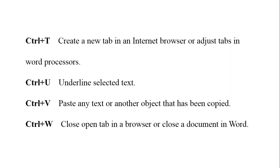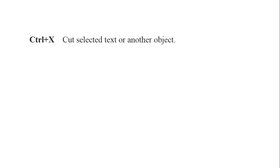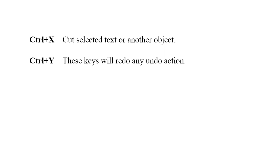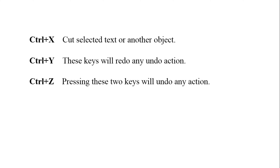Ctrl plus W is used to close the open tab in a browser or close a document in Word. Then ctrl plus X is used to cut the selected text or another object. Ctrl plus Y will redo any undone actions. And ctrl plus Z — pressing these two keys will undo any action. So these are all 26 ctrl shortcut keys from A to Z.